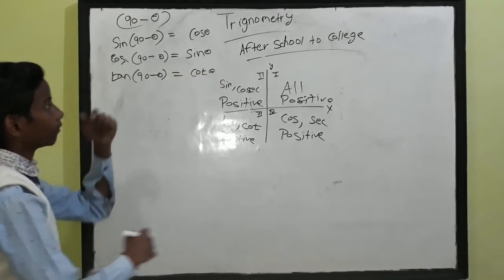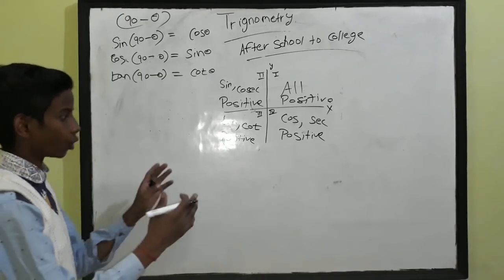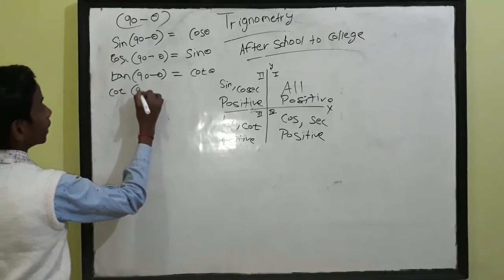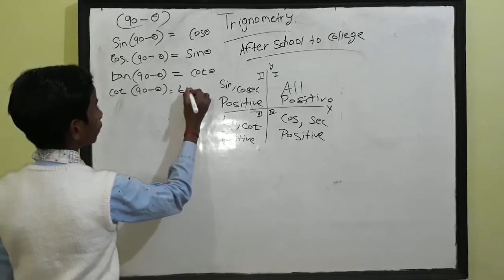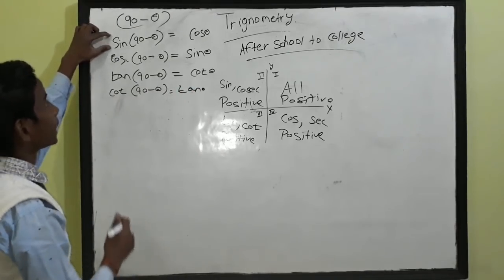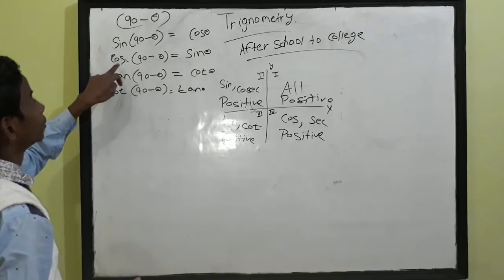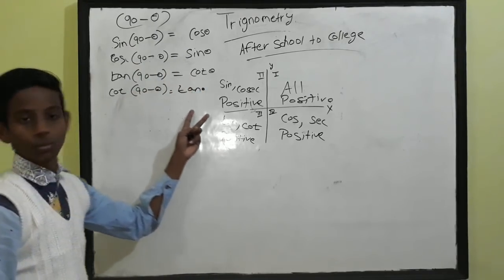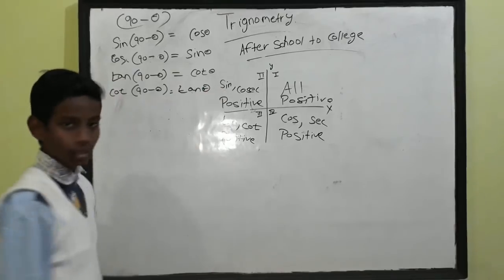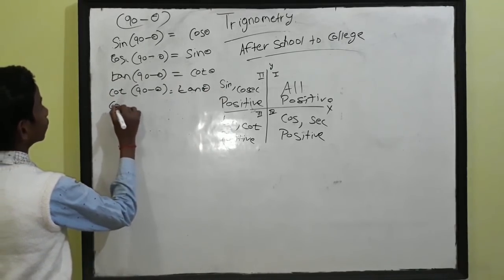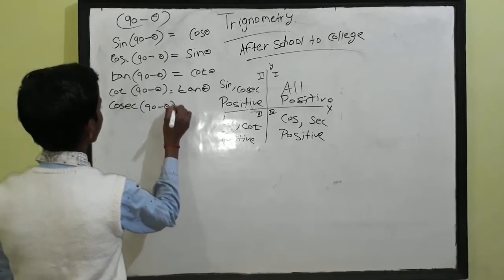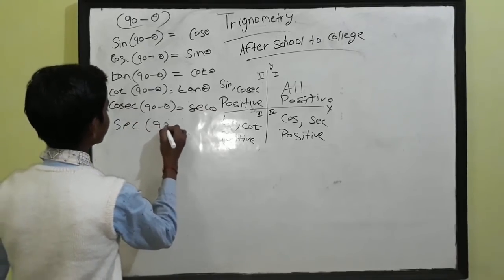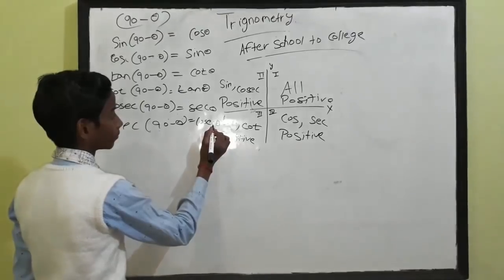These are very simple. But we will show you how to handle formulas like 180 minus theta and 180 plus theta. Tan(90 − θ) = cot θ. Cos(90 − θ) = sin θ. And cosec(90 − θ) = sec θ. We have done this portion — these formulas we learned in 9th and 10th class.